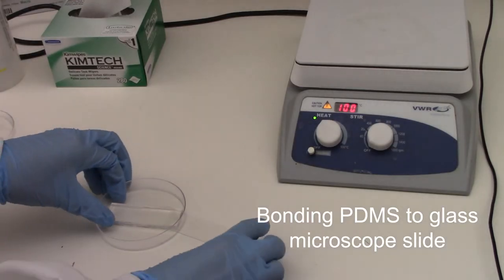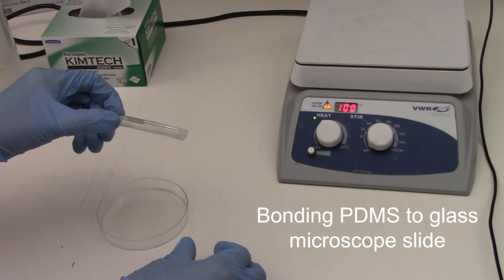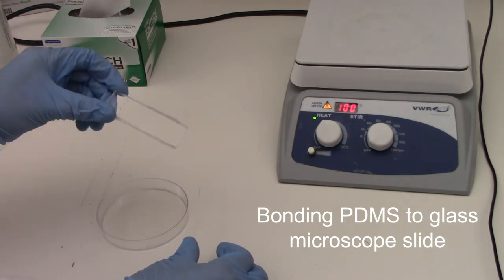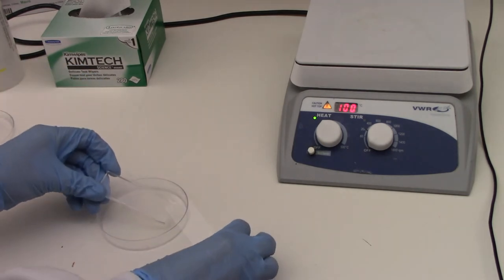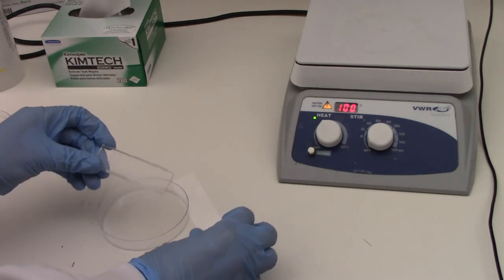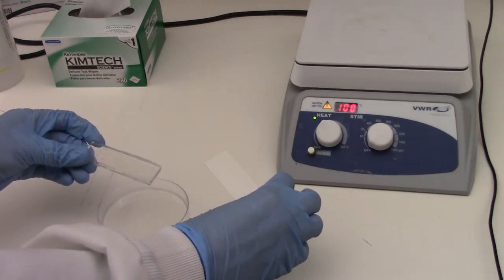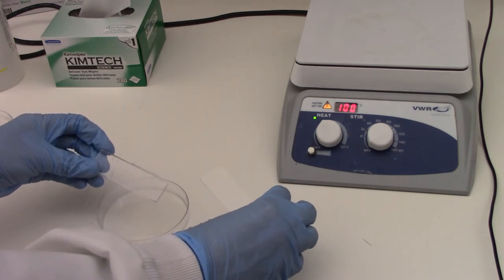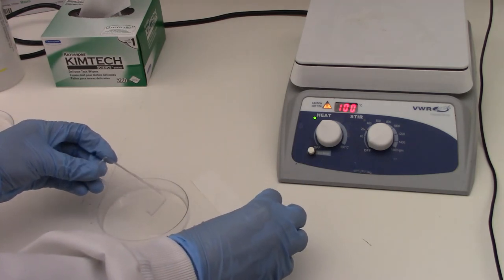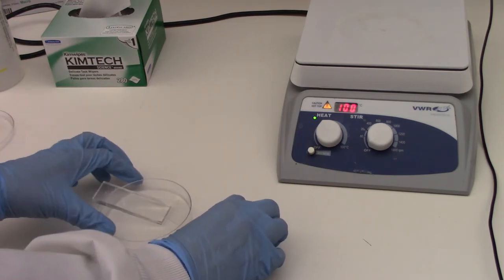Next, we're going to show you how to use plasma to bond this PDMS, already complete PDMS chip to a glass slide. And we'll do that by first cleaning the PDMS and the glass, baking the glass for about five minutes at 100 degrees Celsius. And then applying a plasma treatment for 60 seconds, bonding the two pieces together and putting them in a 90 degrees Celsius oven.